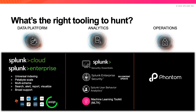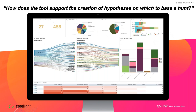Last but not least, you need automation capabilities for hunting. Sometimes threat hunting can be a very repetitive process, and by using a security automation and orchestration response platform like Splunk Phantom, you can leverage out-of-the-box threat hunting playbooks or create your own custom playbooks to automate threat hunting. Splunk also has applications like Splunk Security Essentials that provide out-of-the-box content to help build hunting hypotheses based on the MITRE ATT&CK framework or other frameworks like kill chain phases.